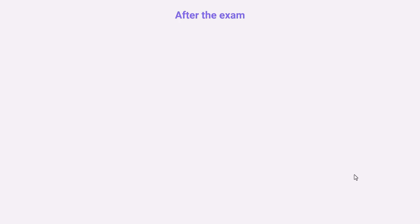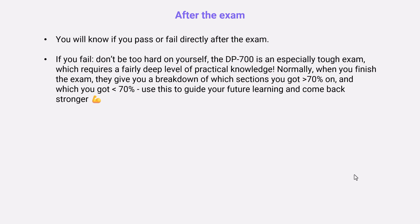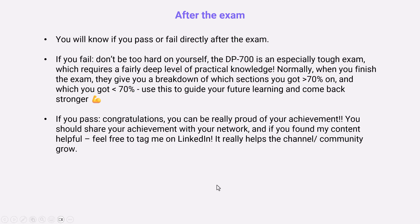So let's talk about after the exam. So you will know if you pass or fail directly after the exam. If you fail, then don't be too hard on yourself. This is a tough exam, the DP700, and it does require a fairly deep level of practical knowledge. When you finish the exam you'll get given a breakdown of which sections you scored less than 70% on. So 700 out of 1,000 is the pass mark scaled score. It's not quite 70% but it's on that ballpark figure. So you'll see which sections you did well on and which ones you did less well on that you need to improve on in the future. If you pass, congratulations. You can definitely be proud of this achievement. It's definitely a good exam to have under your belt. Make sure you to share it with your network. And if you found this series helpful in your preparation, feel free to tag me on LinkedIn or anything like that. It really helps the channel grow.